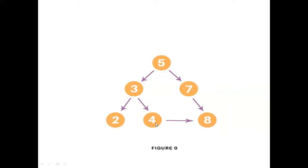Then 4 will be picked. 4 is already having a child available in this queue, so 4 will be expanded. Your result will now be 5, 3, 7, 2, 4. Finally 8 will be expanded and you will get 5, 3, 7, 2, 4, 8. That should be the output according to the breadth-first search algorithm.